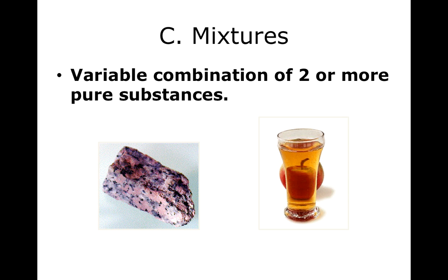An example of a compound is sodium chloride. A mixture is a variable combination of two or more pure substances — you have at least two particle types together, and the amount depends on what you have. A rock is heterogeneous because scooping in different places gives different amounts of different substances. Applesauce is technically homogeneous because no matter where you scoop, you get the same ratio of particle types.